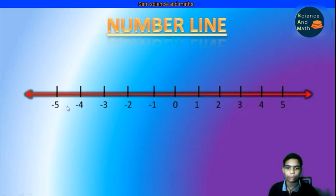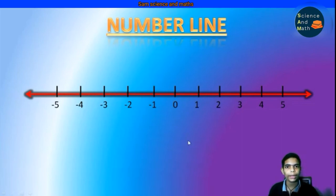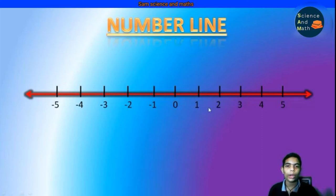For example, minus 5, 2, etc. But what about fractions? For example, half — where is half on this number line? It is exactly between 0 and 1. Here you can see, this is half.